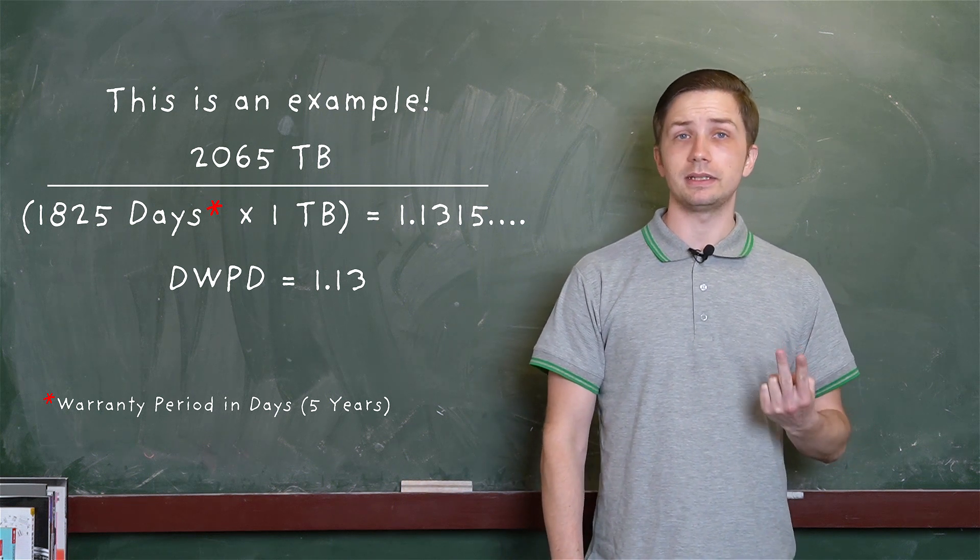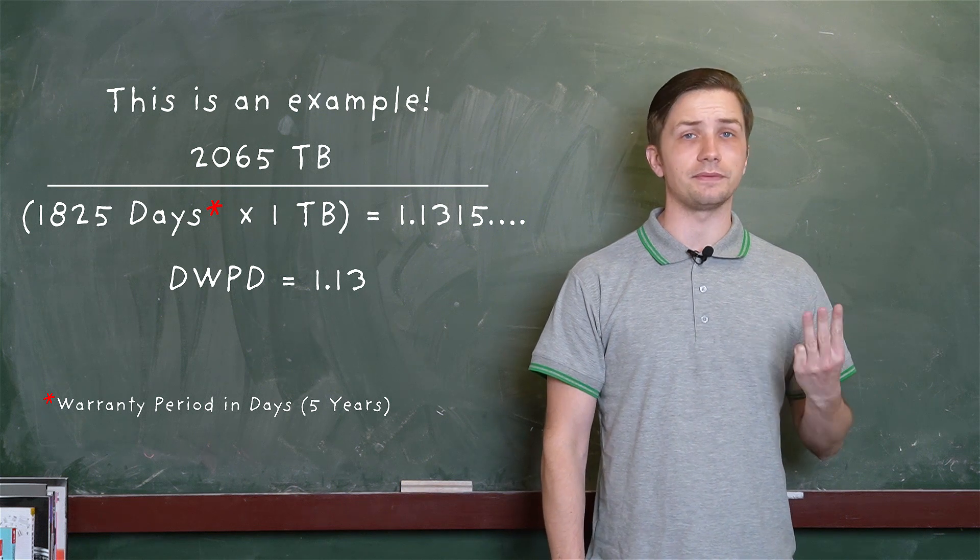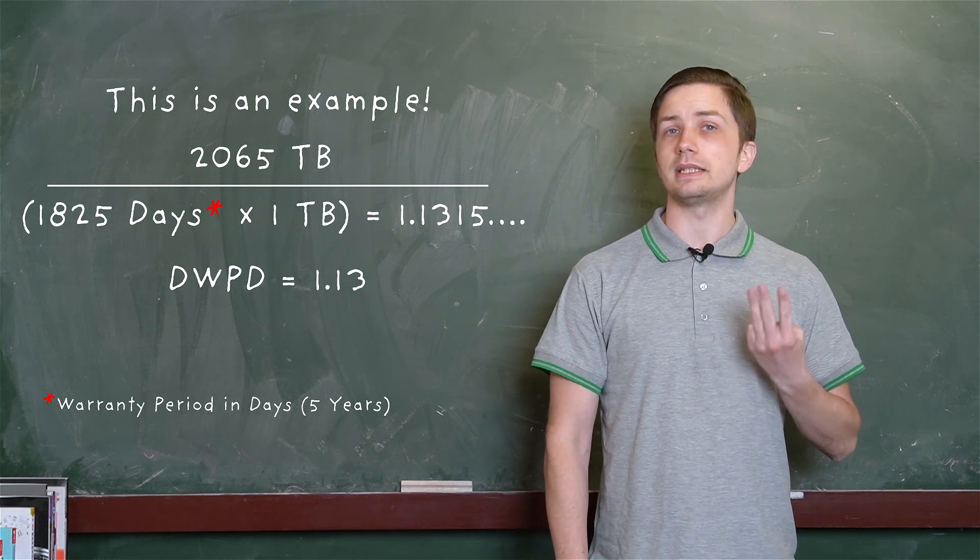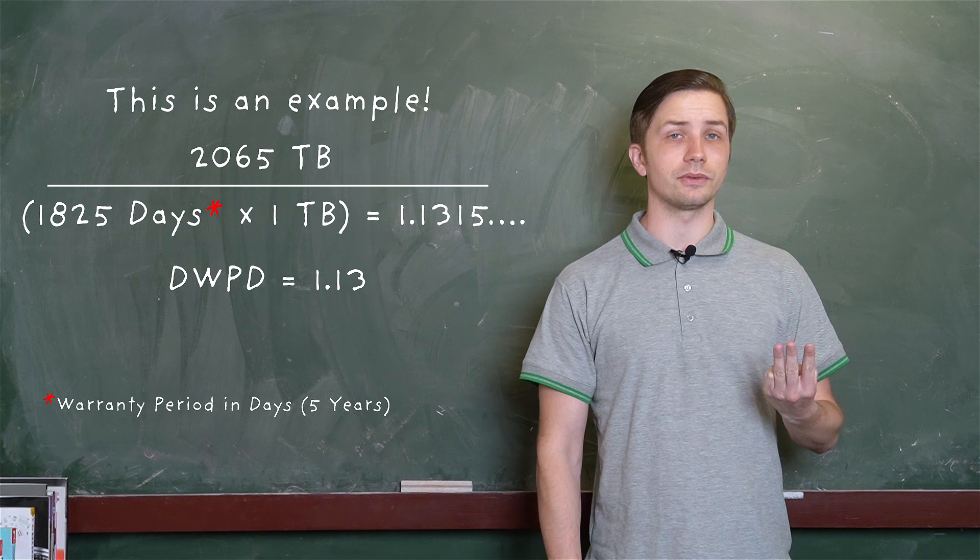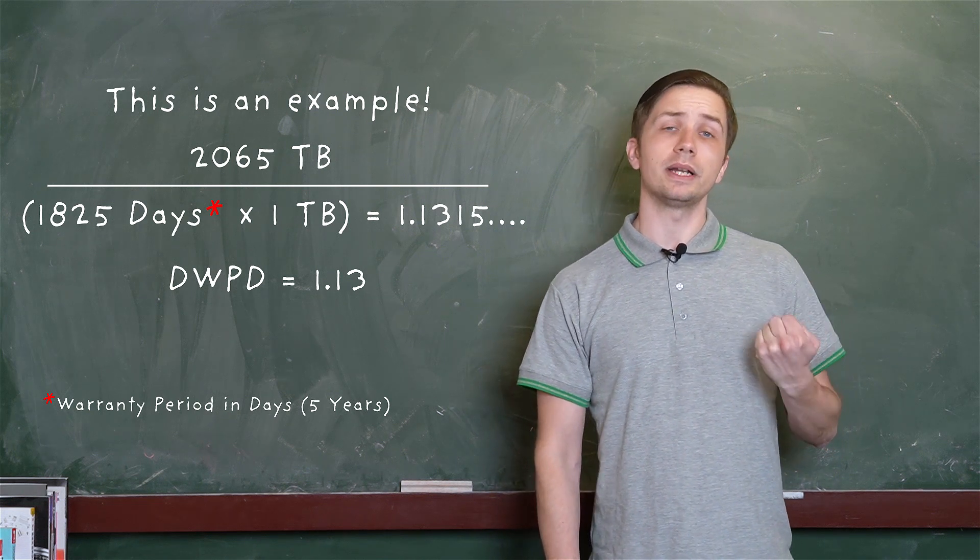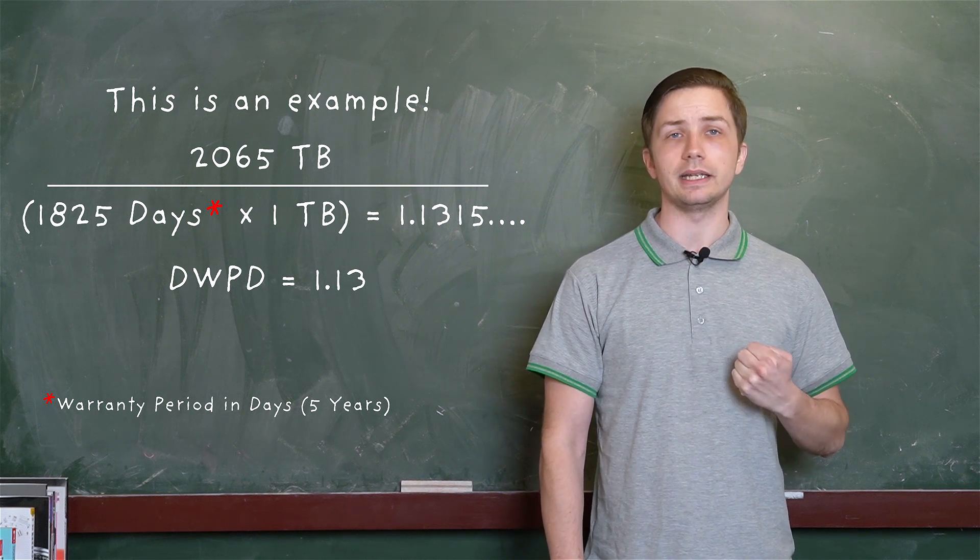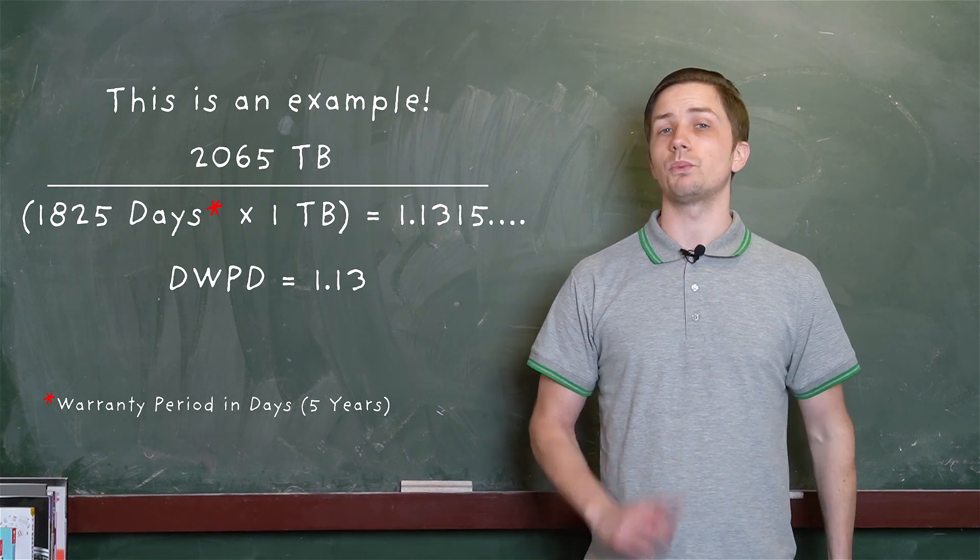Then we divide the TBW, which is 2065, by 1825. That then gives us our DWPD of 1.13. So in other words, this SSD can have roughly 1 and 1 tenth of its full capacity filled and erased daily for 5 years and it won't fail.